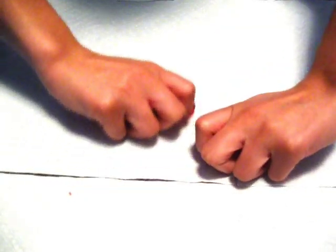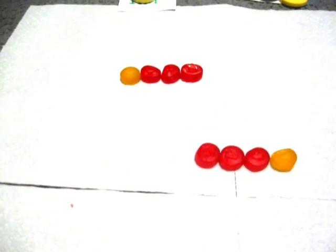The glucose with attached phosphates divide into two separate parts. These are both glyceraldehyde phosphates.